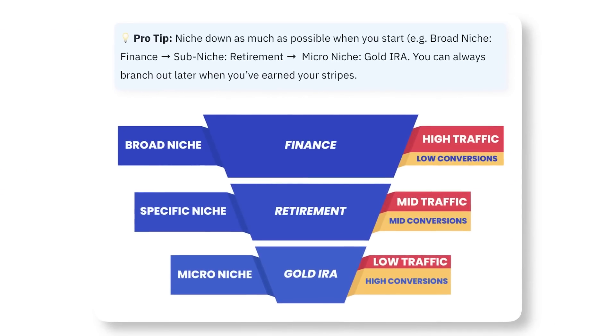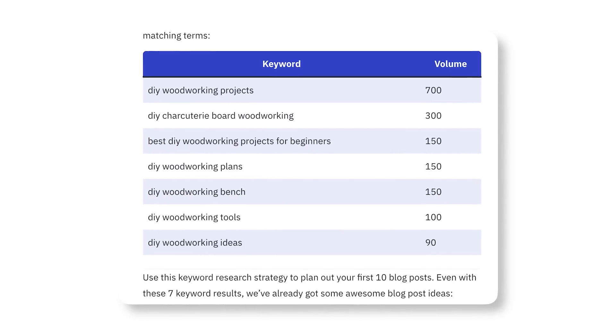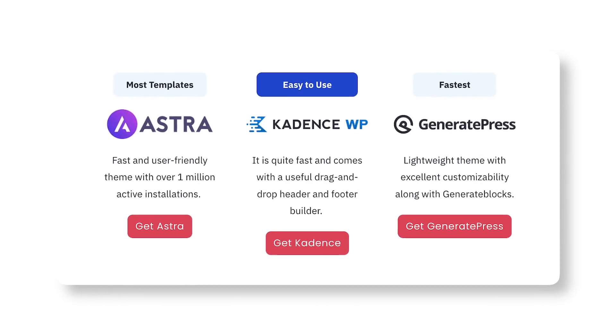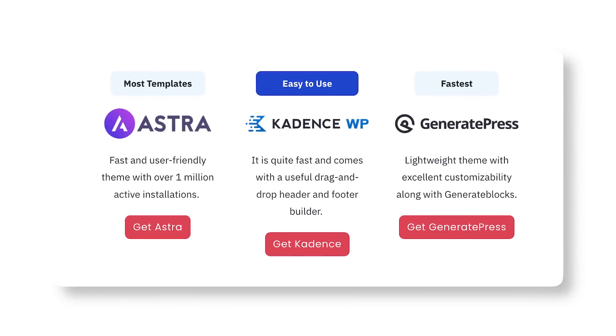So my advice is to use Wordable to save a bunch of time on the initial upload, but then use that saved time to develop your design further and build element templates with free tools like GenerateBlocks. You'll do a lot better with your site if you do that. The first five uploads with Wordable are completely free, but if you want the AI option, you need the paid plan starting at $50 per month — which is probably cheaper than your underpaid VA anyway.